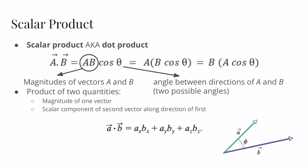We call the scalar product the dot product as well — you'll see a small dot in the middle, which is the dot of the dot product. We define the dot product of two vectors as the magnitude of the two vectors multiplied by cos θ, where θ is the angle between the directions of the two vectors. There are two possible angles — θ and 360° minus θ — but the cosine of both values gives the same result, so it doesn't matter which you use. The commutative law also applies, so all three equivalent expressions give you the same value.